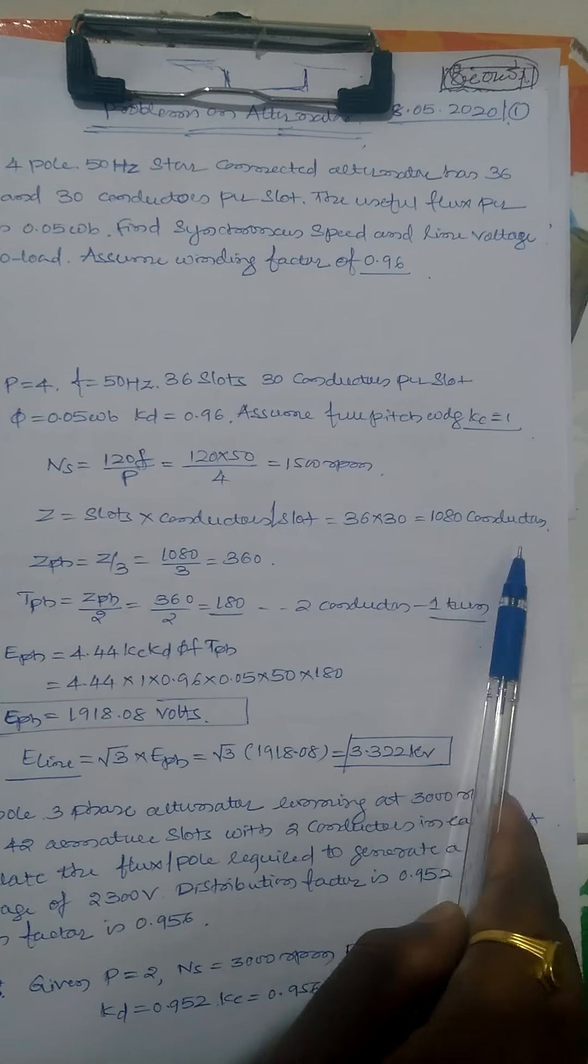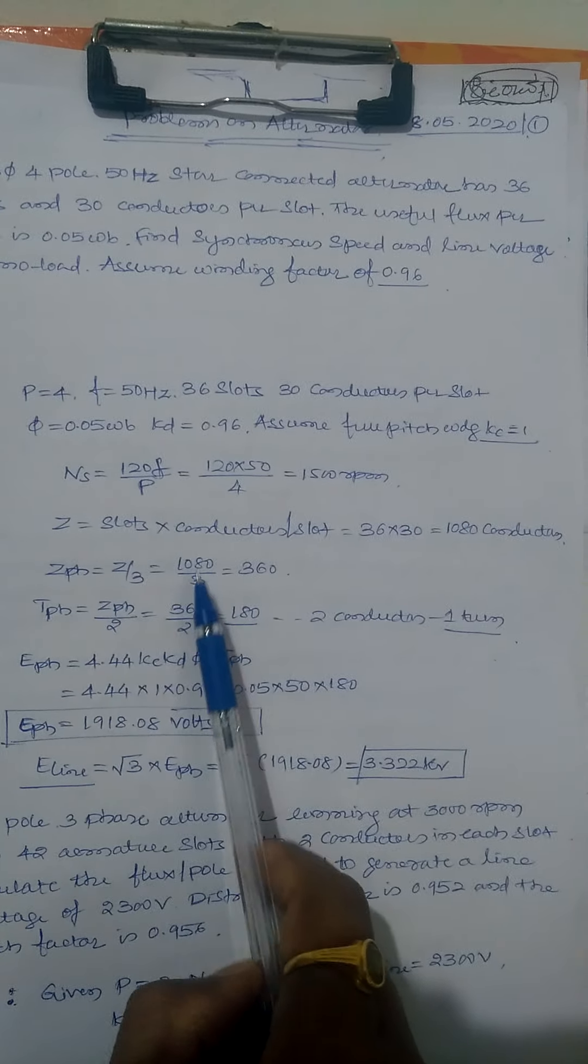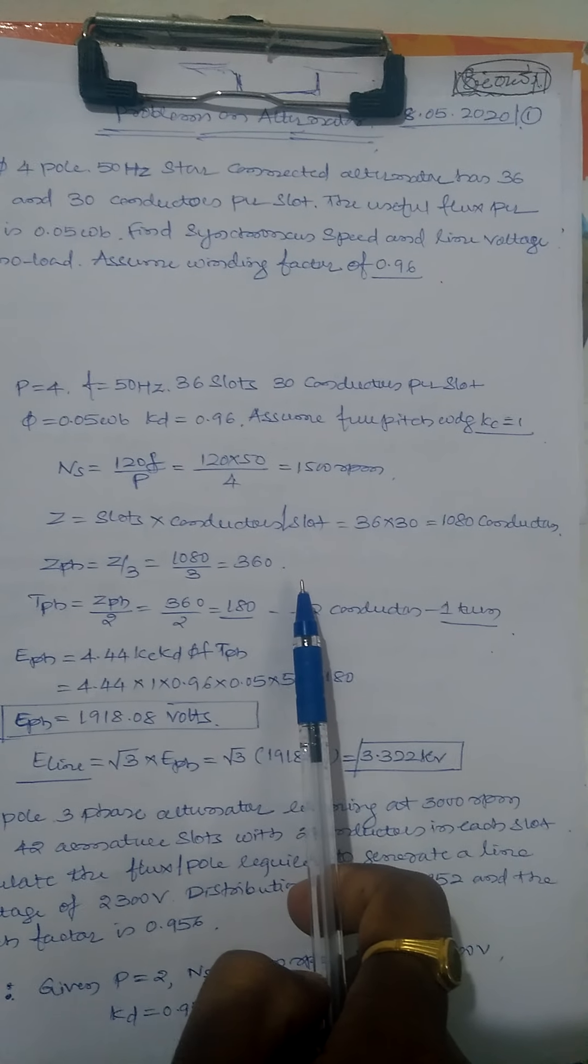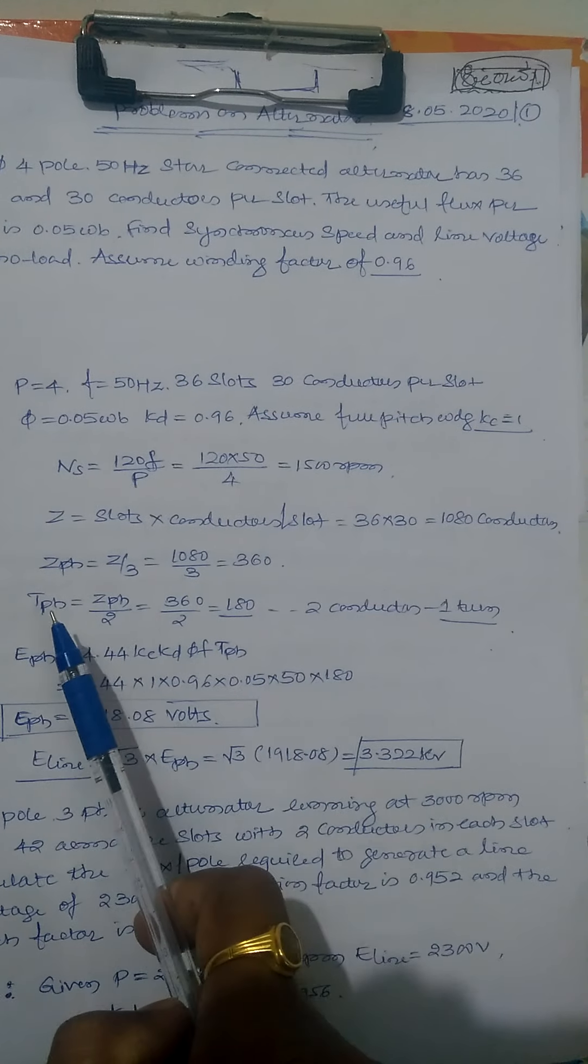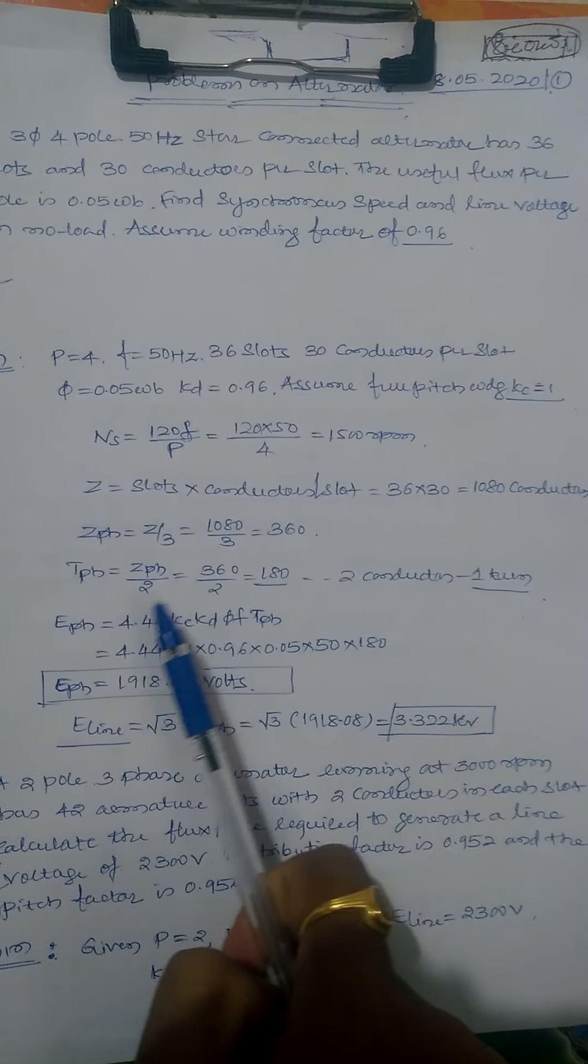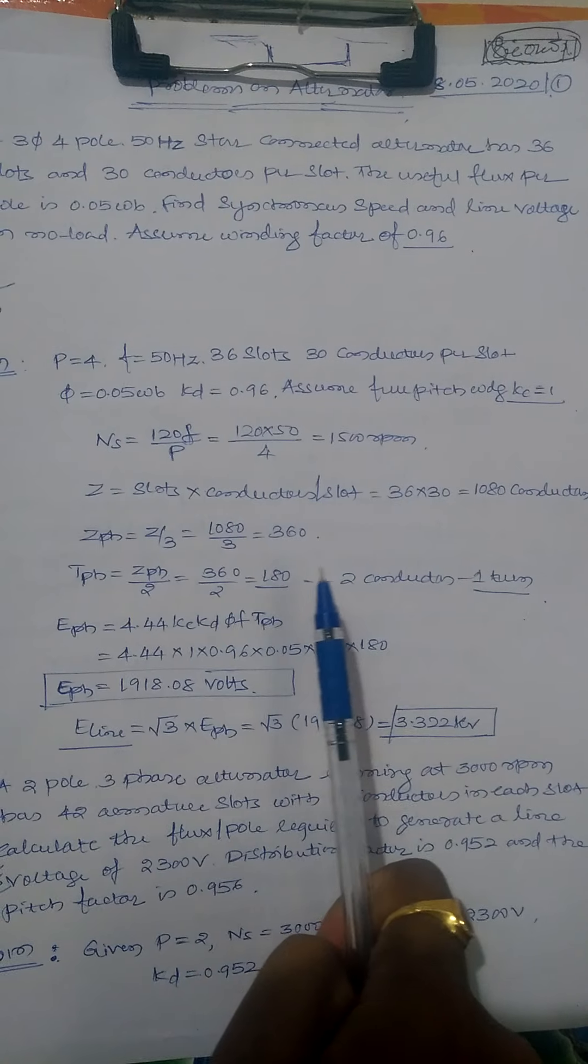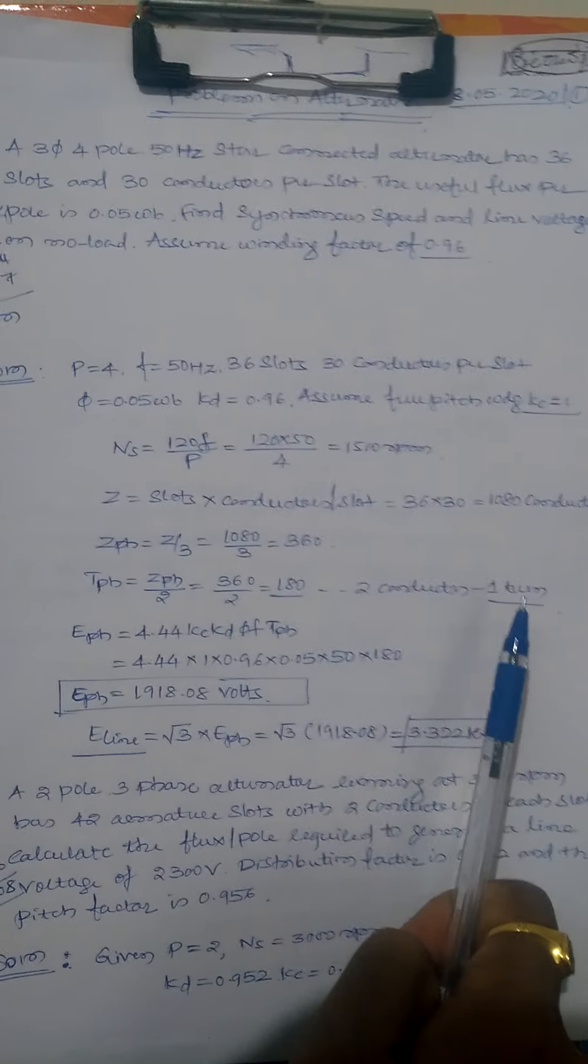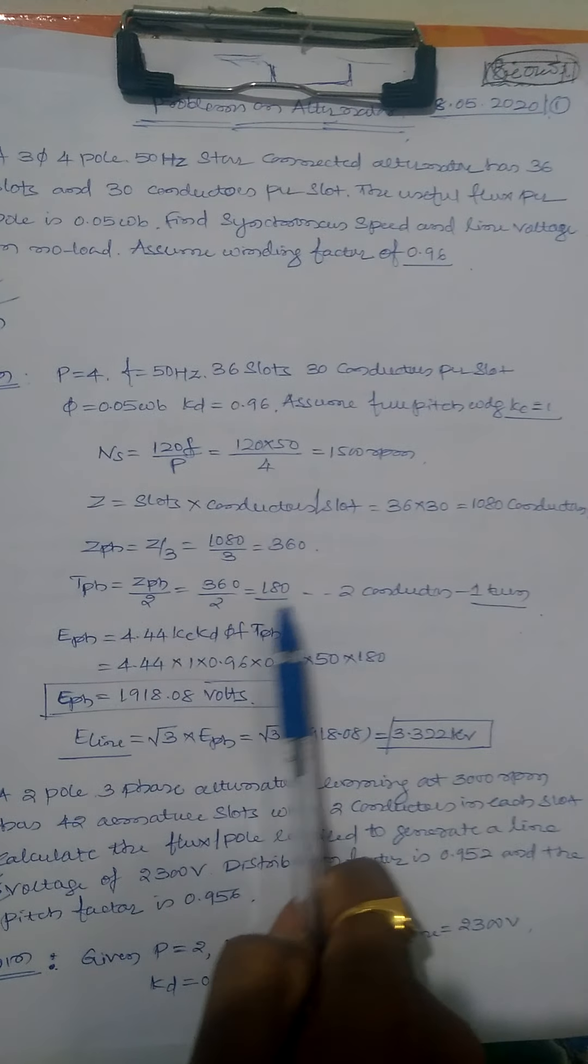Z phase equals Z by 3, so 1080 divided by 3, that is 360 total conductors per phase. Next, T phase. For phase turns, that is Z phase by 2: 360 by 2, that is 180, because two conductors make one turn.